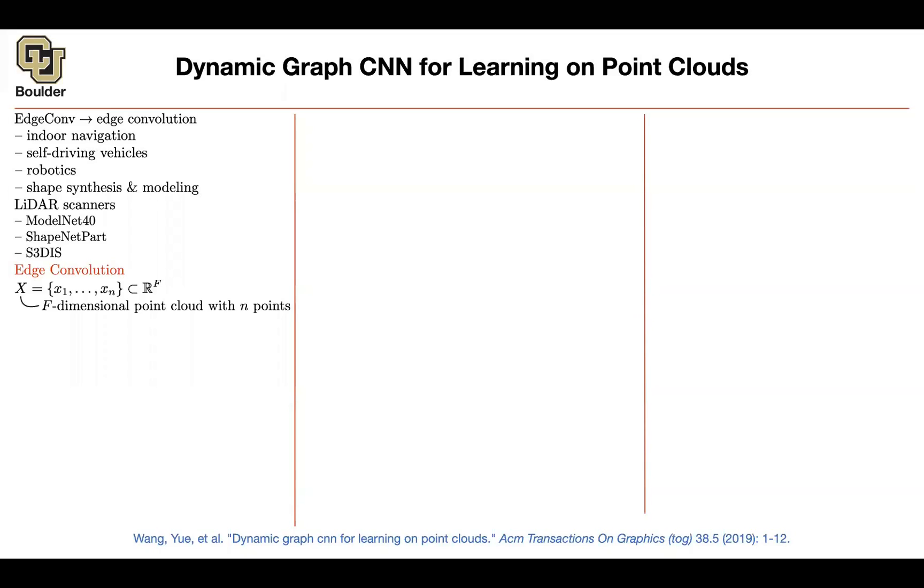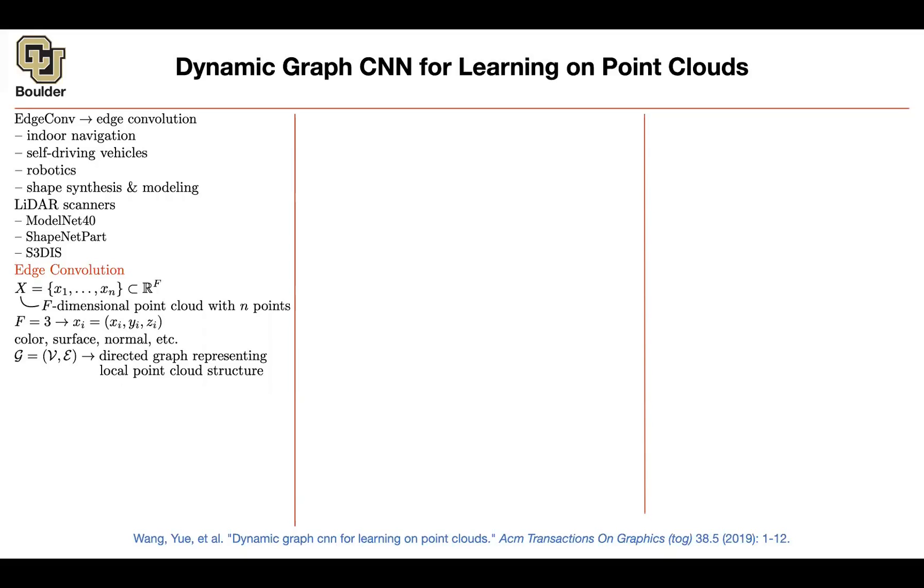Then there is edge convolution. Let's see what that is. We have a point cloud and let's say each one of these points in your point cloud are f-dimensional. This could be xyz coordinate or they could be color, surface normal, etc.